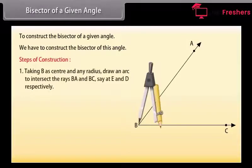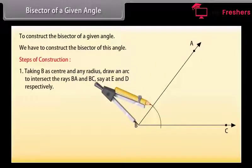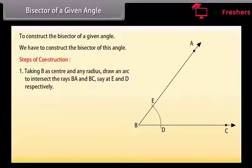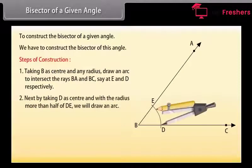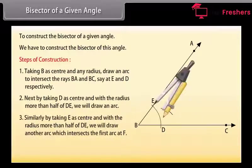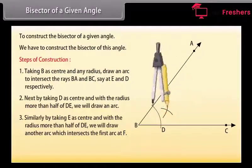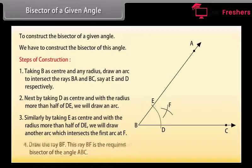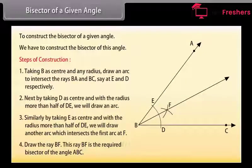First of all, taking B as center and any radius, we will draw an arc to intersect the rays BA and BC, say at E and D respectively. Next, by taking D as center and with the radius more than half of DE, we will draw an arc. Similarly, by taking E as center and with the radius more than half of DE, we will draw another arc which intersects the first arc at F. Now draw the ray BF. This ray BF is the required bisector of the angle ABC.